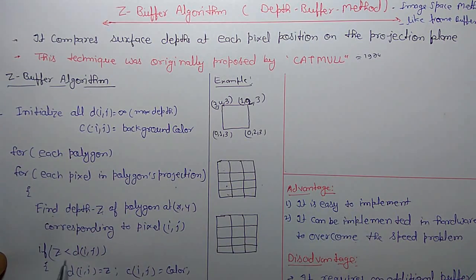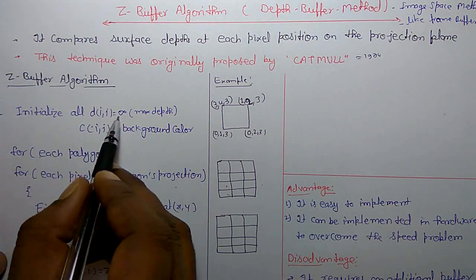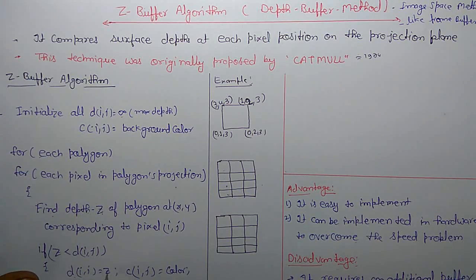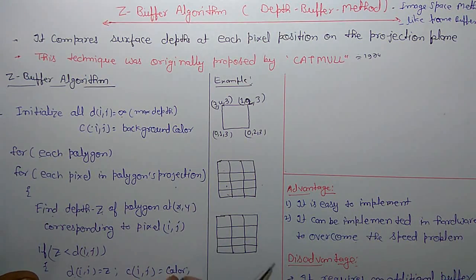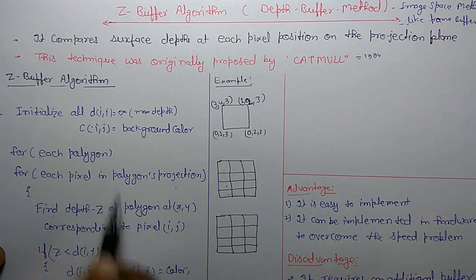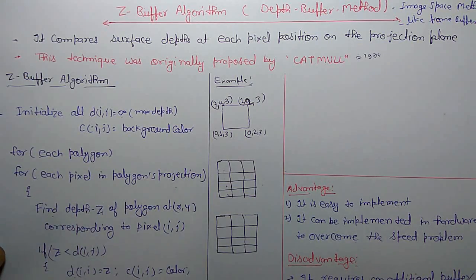If the Z value is less than the initialized infinite value, then the depth value is updated with the new Z value, and the corresponding color is drawn for that pixel. This process is performed for each polygon.